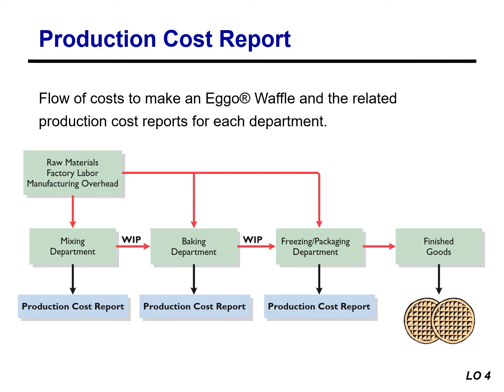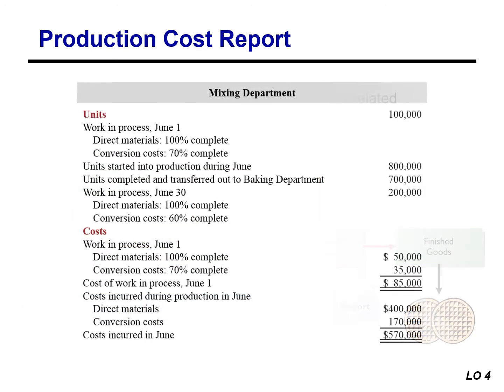For example, in producing Eggo waffles, Kellogg Company prepares three production cost reports: one for the mixing department, one for the baking department, and one for the freezing and packaging department. This is the data for the mixing department at Kellogg Company for the month of June. We will use this information to complete a production cost report for the mixing department.